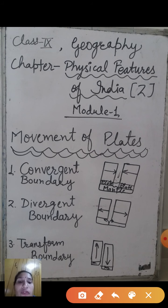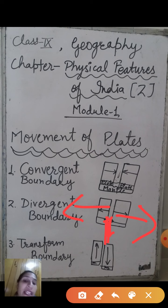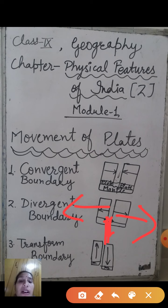The second movement is divergent, where two plates move away from each other. This is called a constructive movement. As you can see in the given diagram, when there is divergent movement and two plates move apart, lava erupts from underneath. As the lava comes up, the temperature decreases and it solidifies, forming new crust. Because a new crust is formed here, this is called constructive movement.